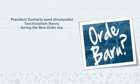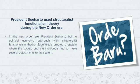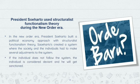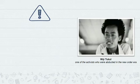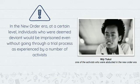President Suharto used structural functionalism theory during the New Order era. He built a political economy approach based on this theory, creating a system where society and individuals had to make adjustments to the system. If an individual did not follow the system, they were considered deviant and would be sanctioned. At a certain level in the New Order era, individuals deemed deviant would be imprisoned even without going through trial processes, as experienced by a number of activists.